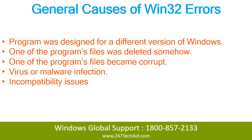General causes of Win32 errors: the program was designed for a different version of Windows; one of the program's files was deleted somehow; one of the program's files became corrupt; a virus or malware infection; or incompatibility issues.